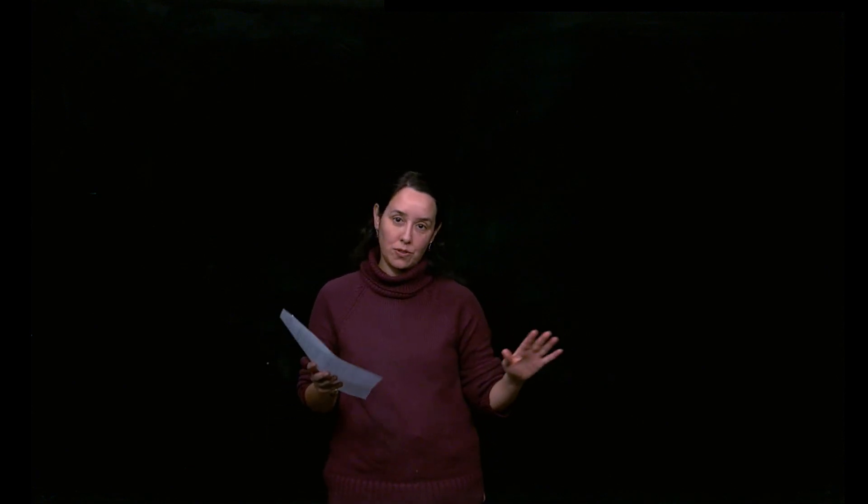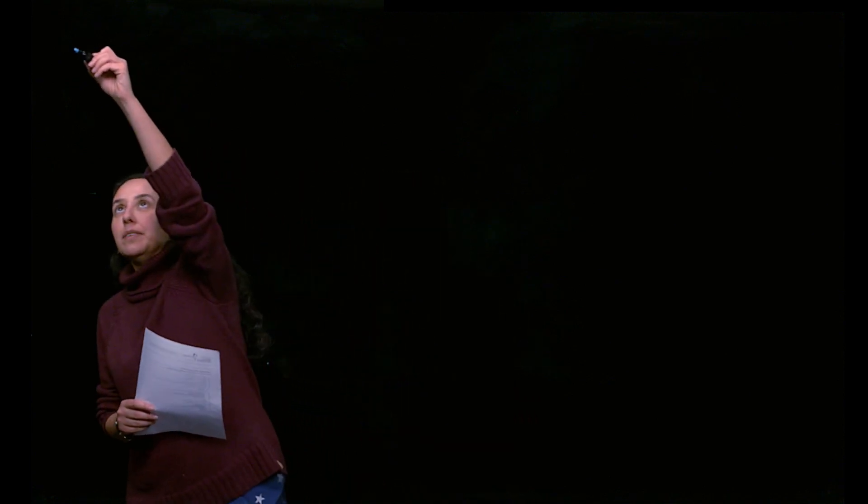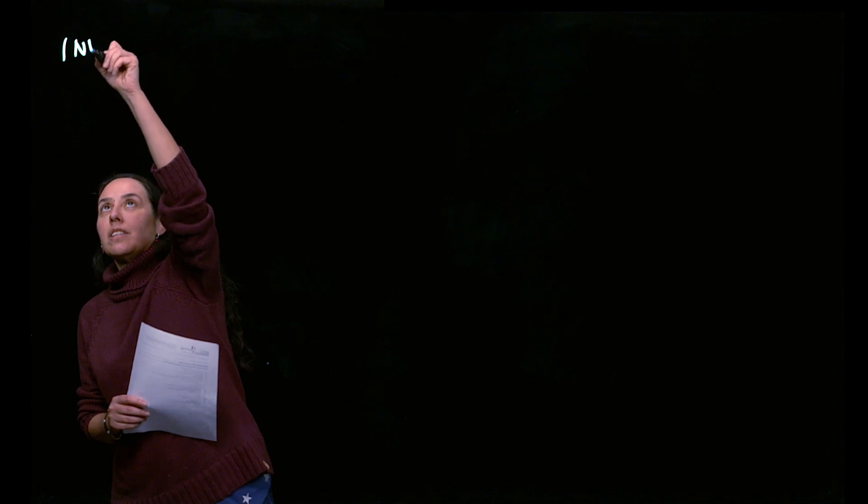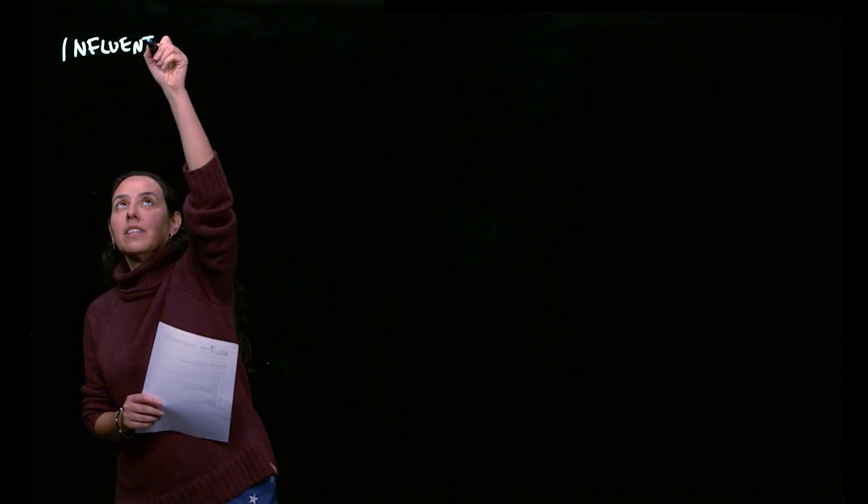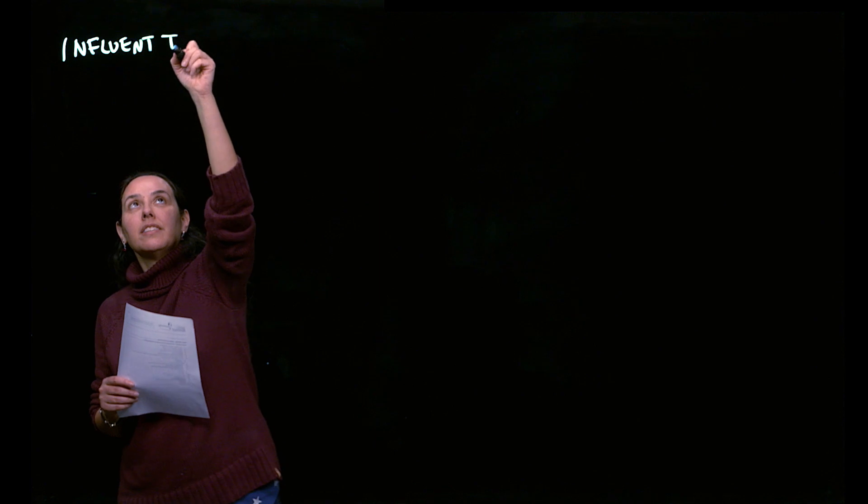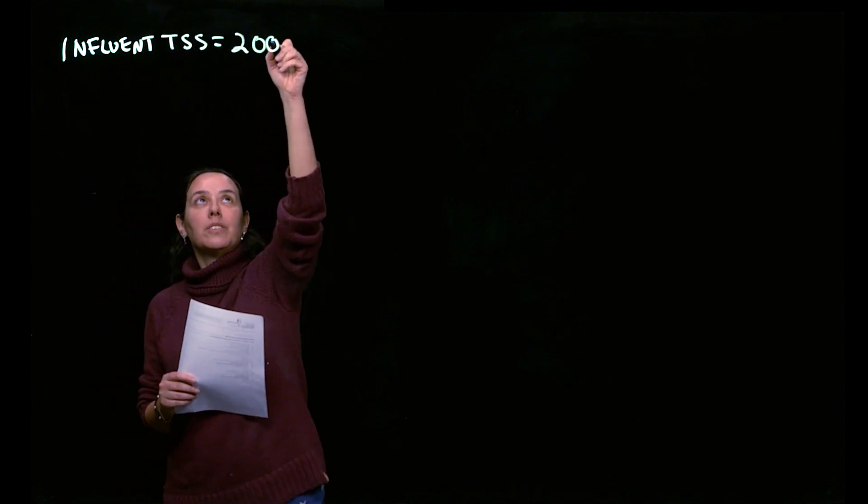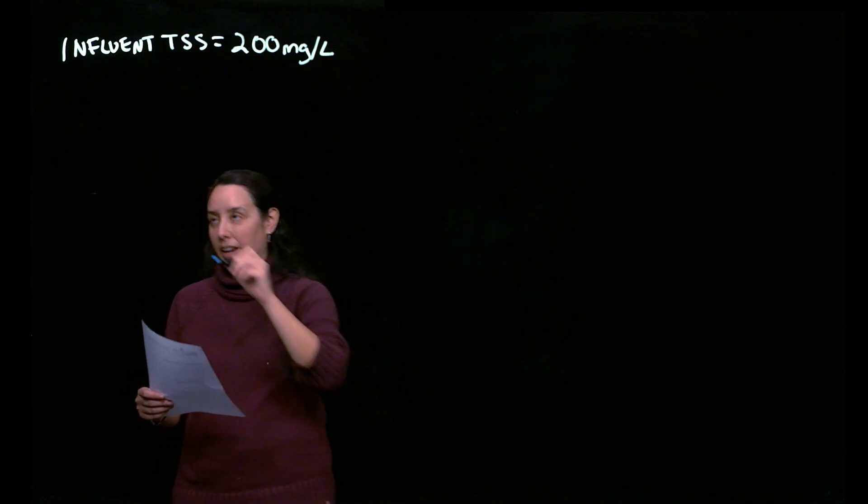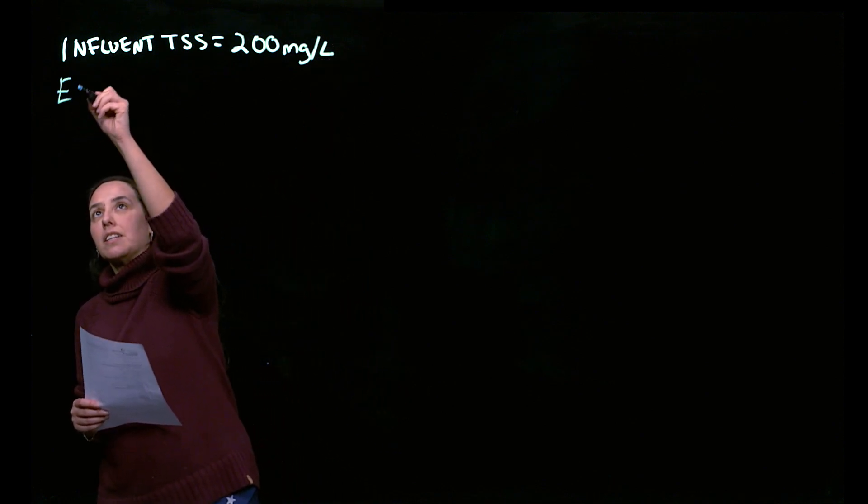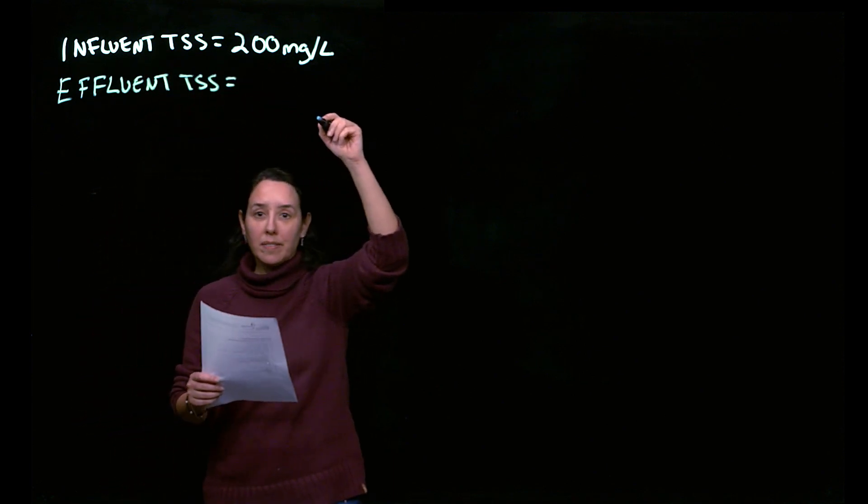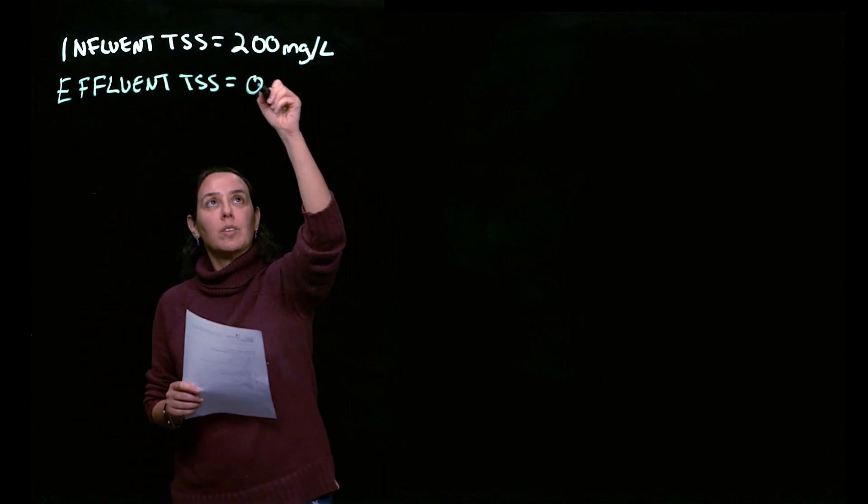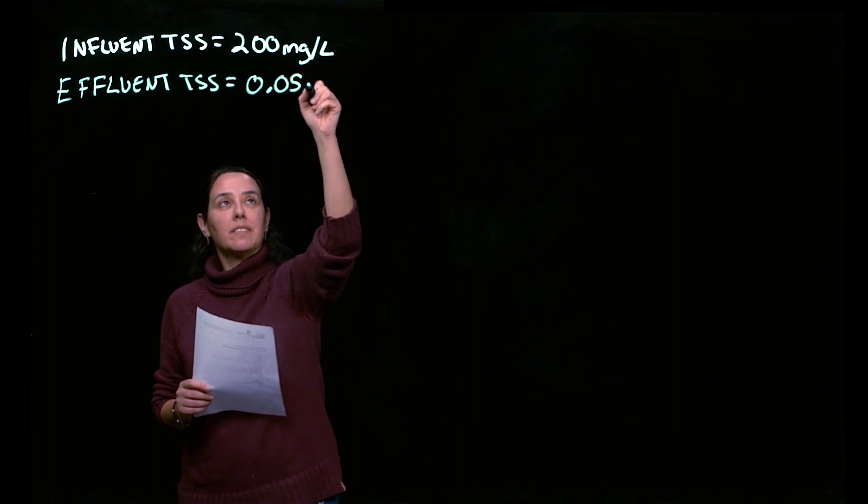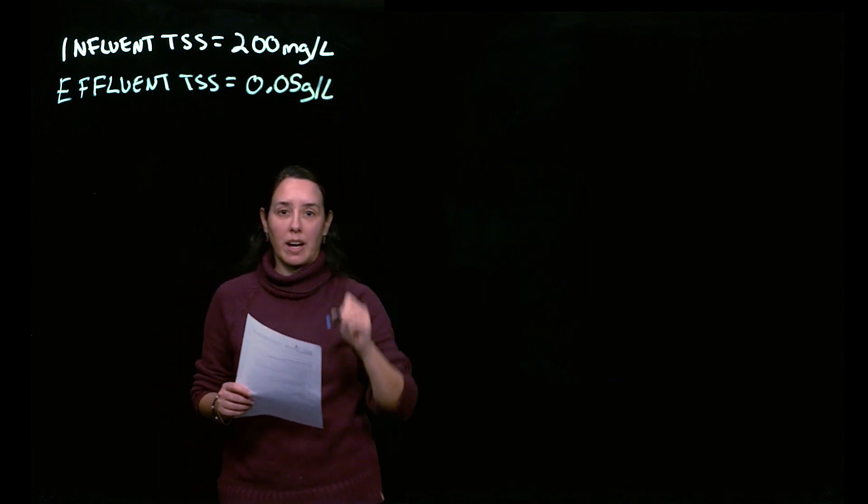OK, so let's look at an example where we've got different units for our influent and effluent and calculate the efficiency. So this time, let's start with an influent TSS equal to 200 milligrams per liter. And we'll say that the effluent TSS is 0.05 grams per liter.